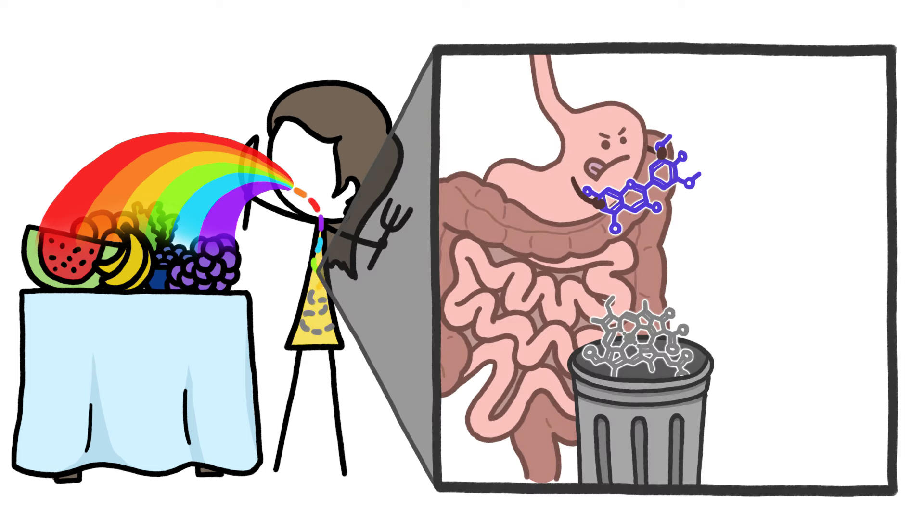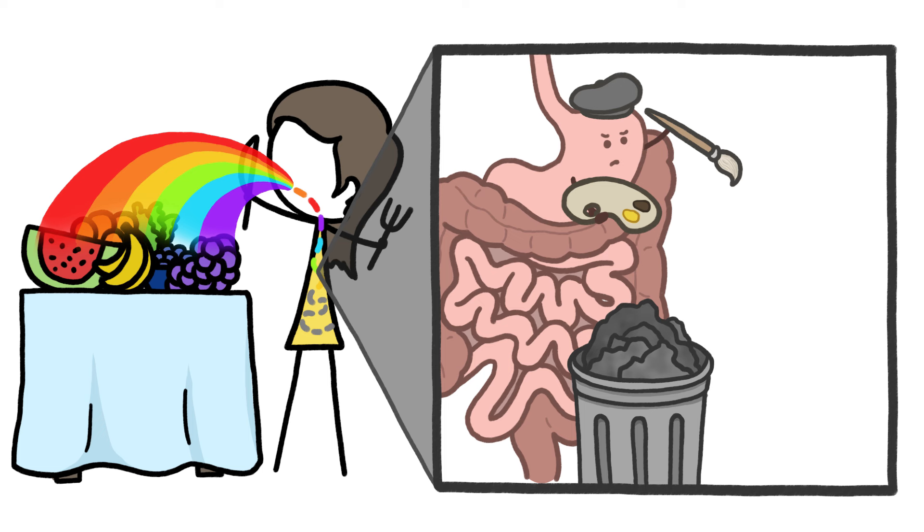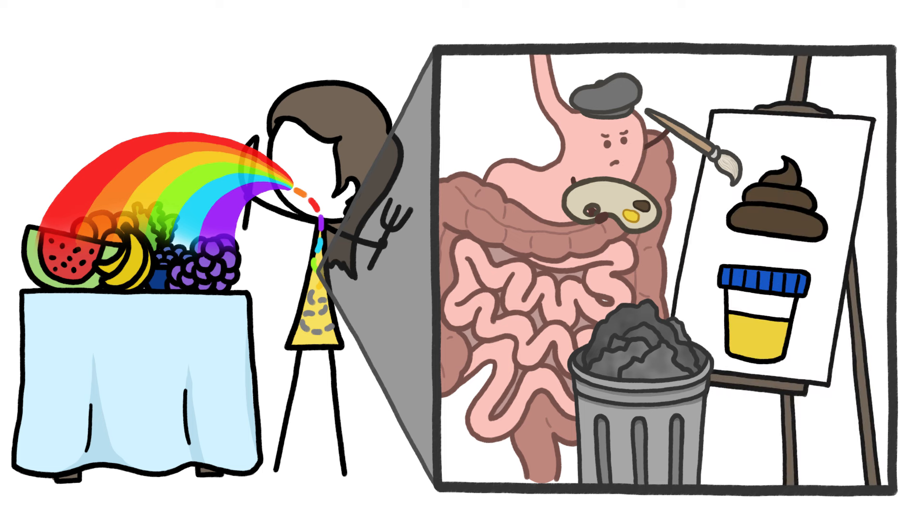And actually, our digestive systems destroy pretty much all of the colors in our food, turning what's left into a grayish mass. The pigments that show up in our poop and pee come not from our food, but instead from our blood.